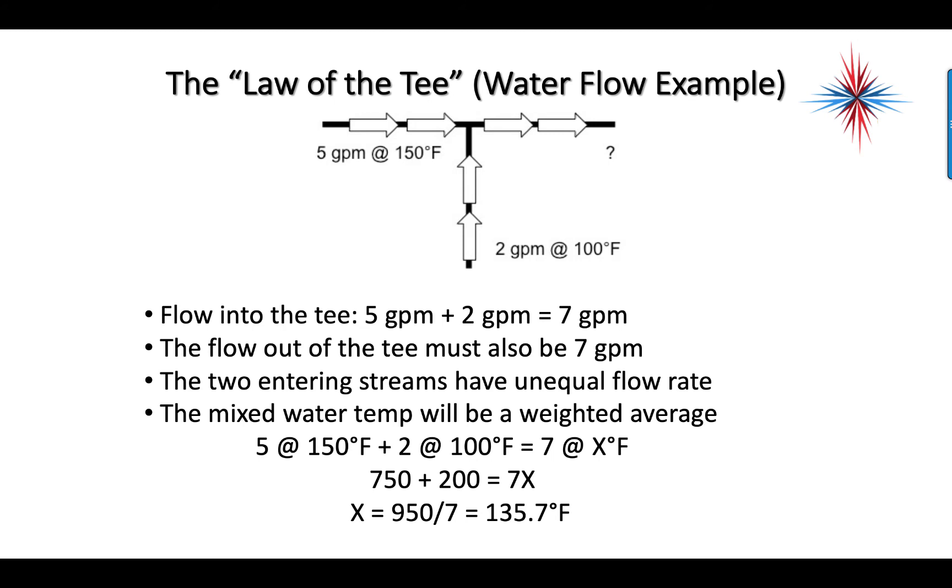We're solving for X. We multiply five times 150 - that gives me 750. We multiply two times 100 - that gives me 200. Still equals 7X. Yes, I'm going back to high school algebra here. To solve for X, you have to do the same thing on both sides. We add 750 and 200 together because there's no X's or letters after them - comes up with 950. To get rid of this seven, I have to divide both sides by seven. So X is 950 divided by seven, equals 135.7 degrees is my mixed water temperature. Got to use a little bit of algebra here. Who said high school math will never be used in the future? You do use it.